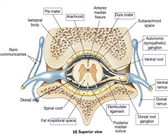This slide shows a transverse section of the spinal cord. The spinal cord has a central canal filled with cerebrospinal fluid. The posterior surface has a shallow groove called a sulcus, and the anterior portion has an even deeper groove called the fissure. The fissure and the sulcus separate the spinal cord into right and left halves.